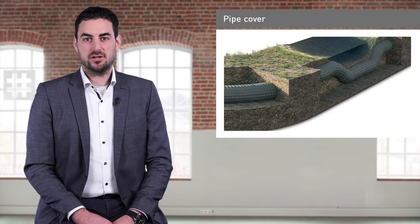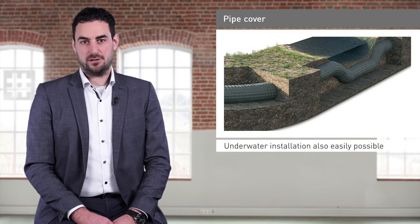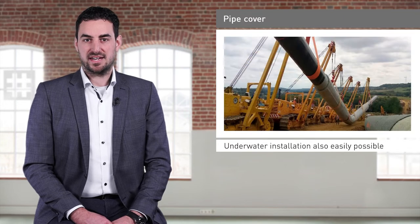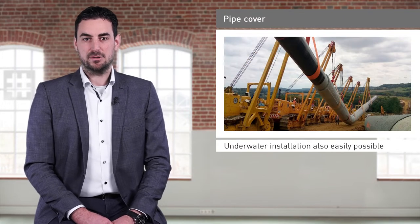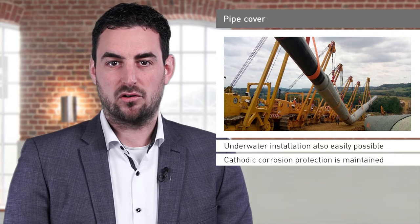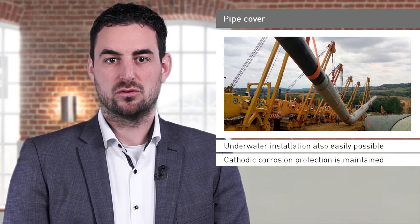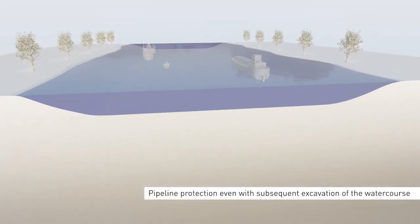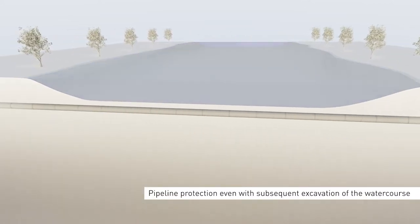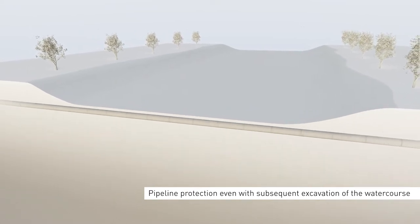Another important benefit of the textile formwork is the straightforward underwater installation. The pipeline is lifted into place after the concrete has set, using side booms or other suitable lifting equipment. It has been proven that the use of textile pipe casing does not impair the cathodic corrosion protection of a pipeline. All the advantages of the concrete mat just presented can also be applied to a so-called indirect pipeline cover. Such a cover may be relevant when the existing pipeline cover is removed during construction works or excavations in the watercourse.